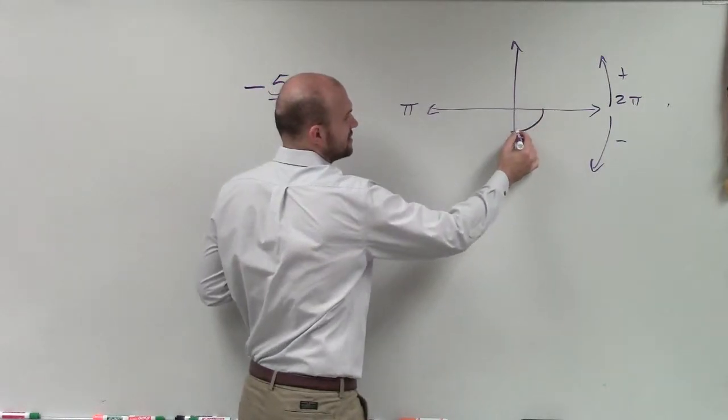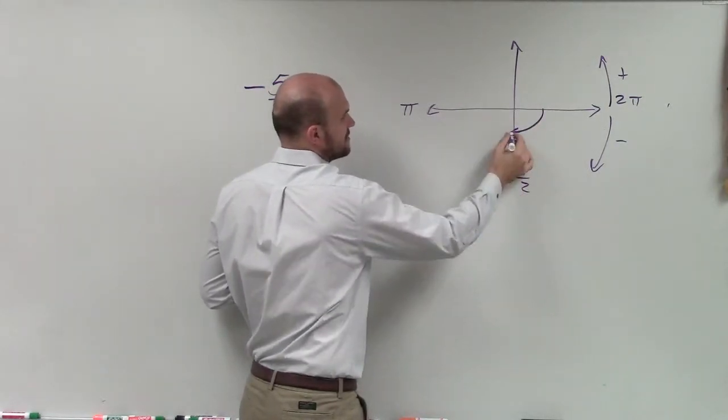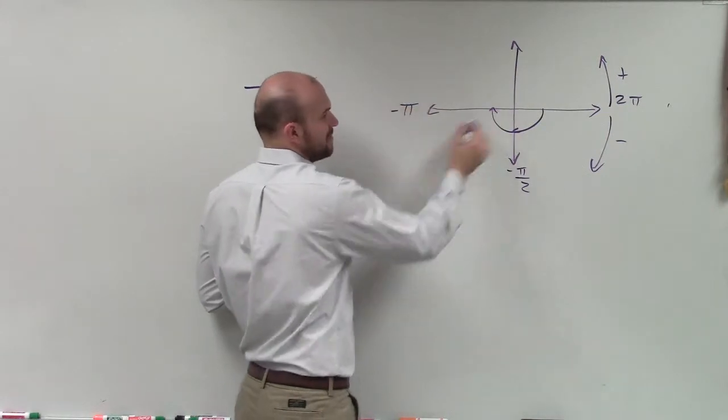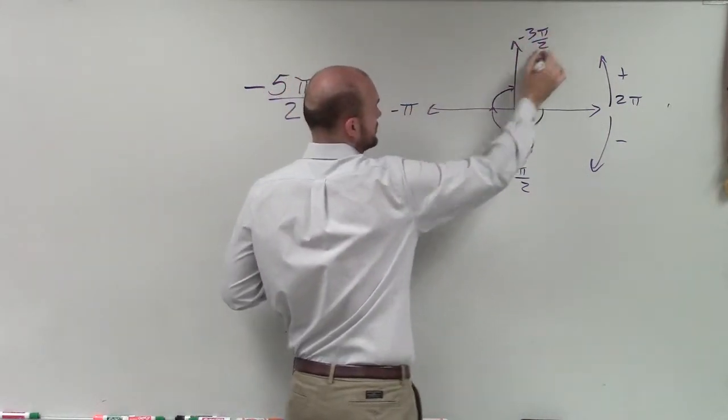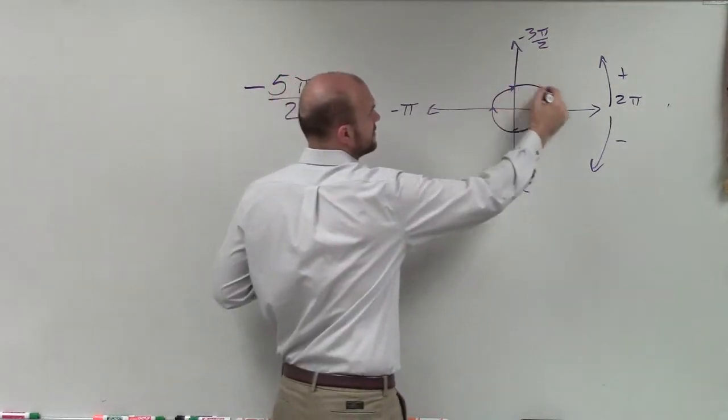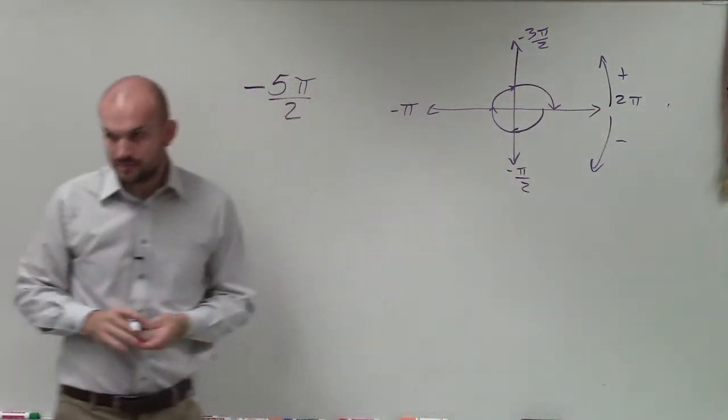going in the negative direction, this would be negative π/2. Over here would be negative π, this distance would be negative 3π over 2, and then over here would be negative 2π, right?